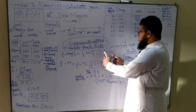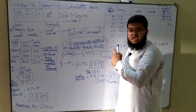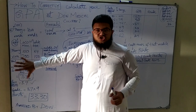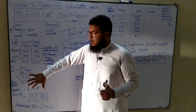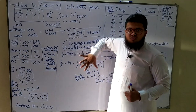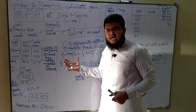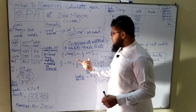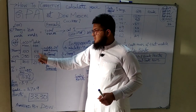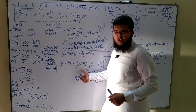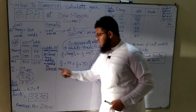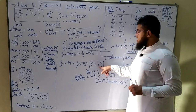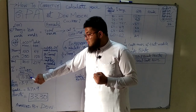Now let's apply this wrong method on the same original data to see if it gives the correct result. Two-thirds of the theory percentage: 2/3 of 64% plus 1/3 of the viva percentage — the viva percentage is 150 out of 200, which is 75%. Adding these: (2/3 × 64) + (1/3 × 75) gives a percentage of 67.7%.